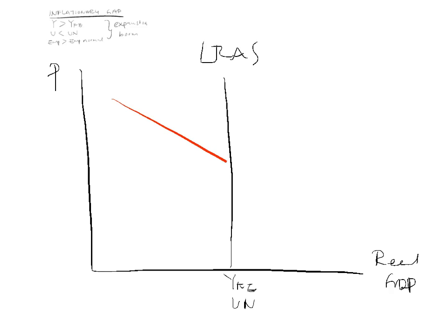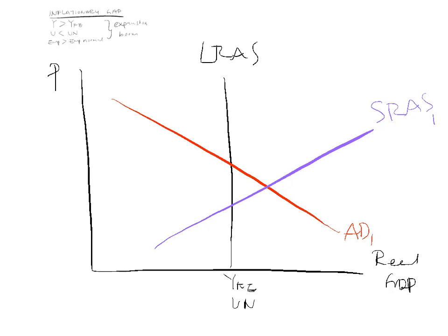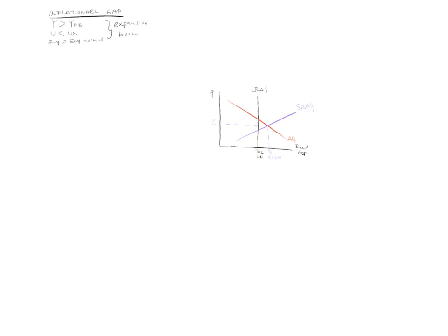We have aggregate demand AD1 and short-run aggregate supply SRAS1. Our current output level is Y1, where unemployment is less than the natural rate. Do not forget to put in your price level, P1. So this is where we are at the moment, in a time of an expansion or a boom.